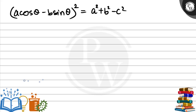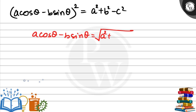Taking the square root on both sides, a cosθ - b sinθ equals square root of a² + b² - c². So you can say hence proved. This is the explanation to this question. I hope you understood the explanation. Thank you.